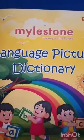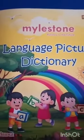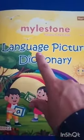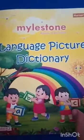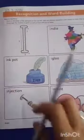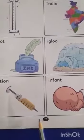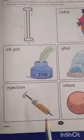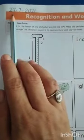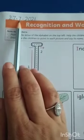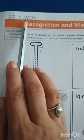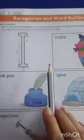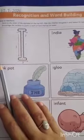Now we will read some vocabulary pictures of letter I from your book of Language Picture Dictionary. We will open the book and this is on page number 23. First of all, we will mention the date 27.7.2021. Now, let's start the reading.